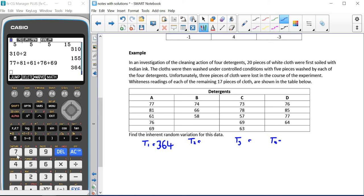For our second group, we have 74, 66 and 58, which gives us 198 as our total for the second detergent.